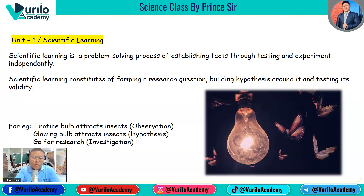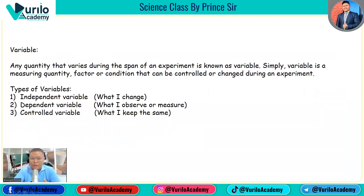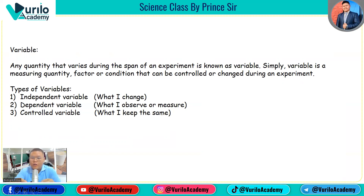In the scientific learning process, there are different types of variables involved. A variable is any quantity, factor, or condition in an experiment that can vary or change — or be kept constant and controlled. Generally, any quantity that varies during the span of an experiment is known as a variable.